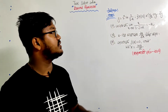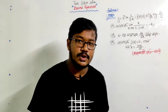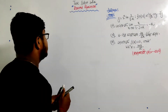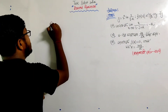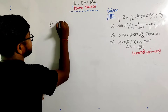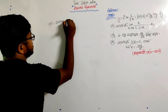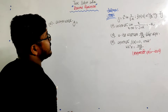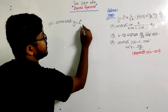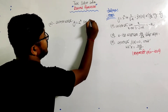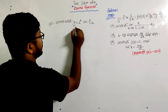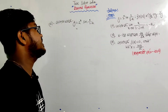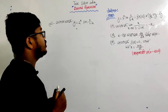Now the second problem: y is equal to 2 to the power x into ln of 1 by 1 minus x. I am going to write this problem. So y equals 2 to the power x into ln of 1 by 1 minus x.